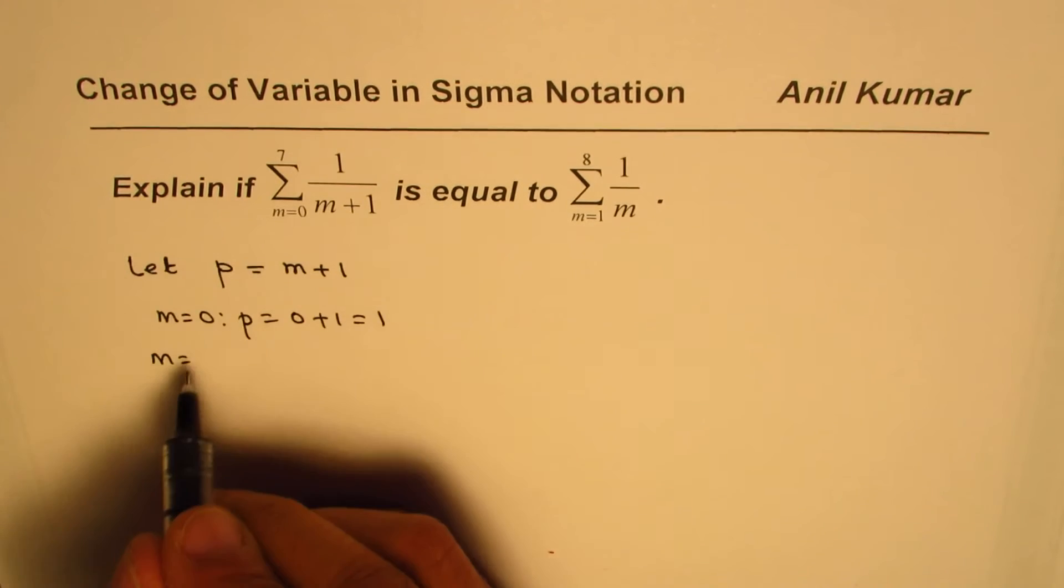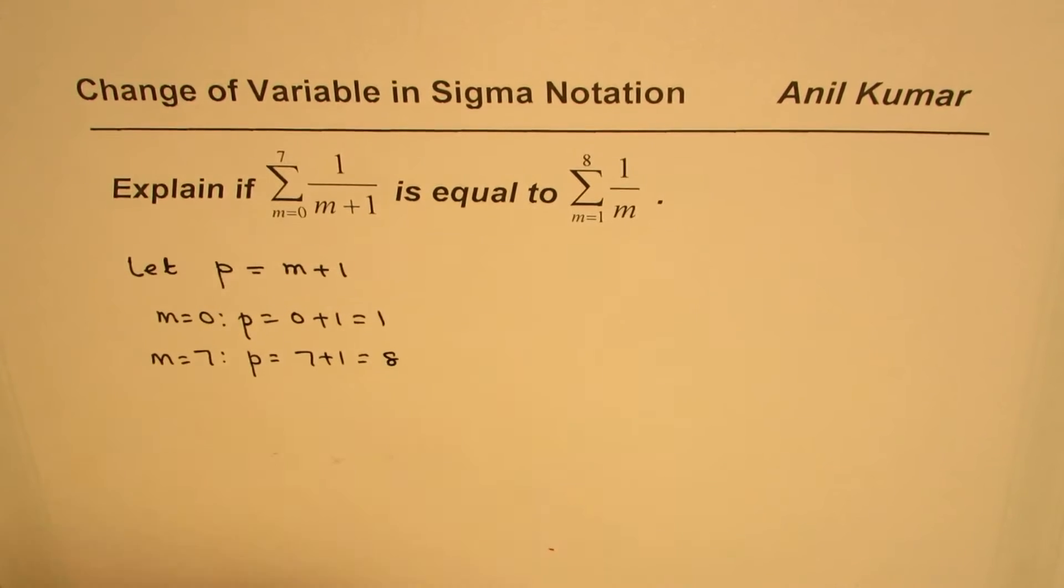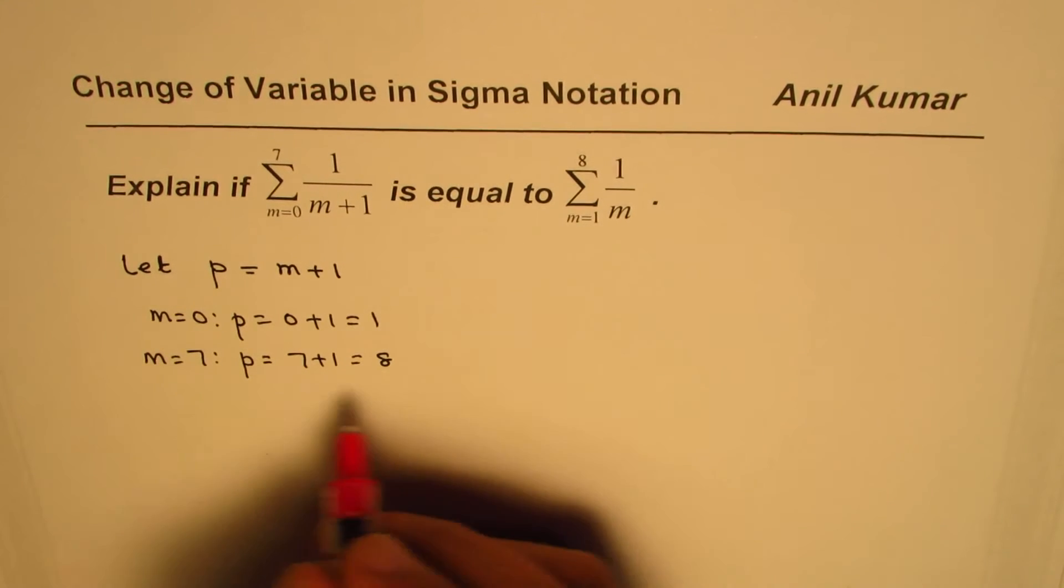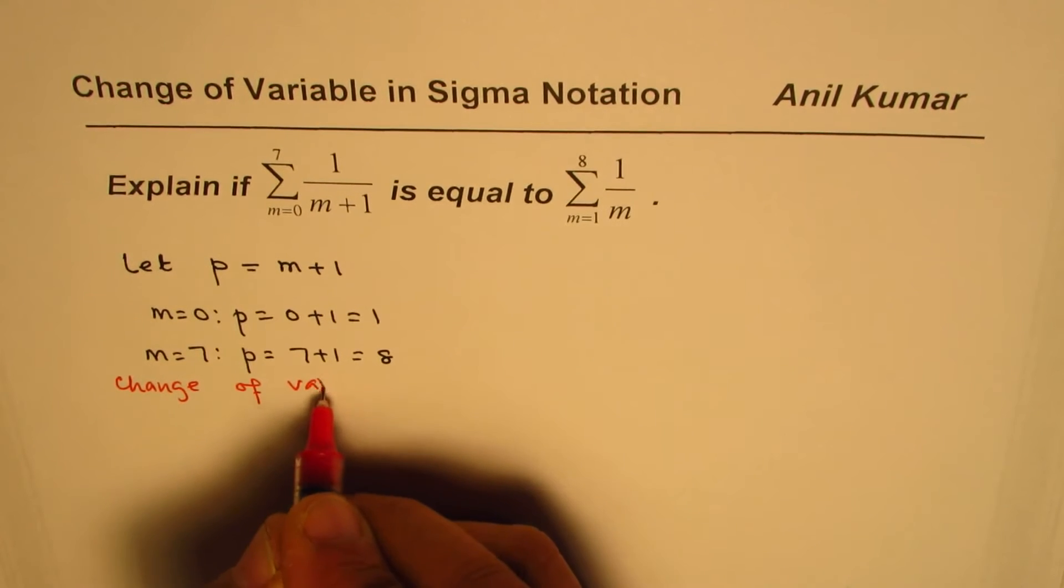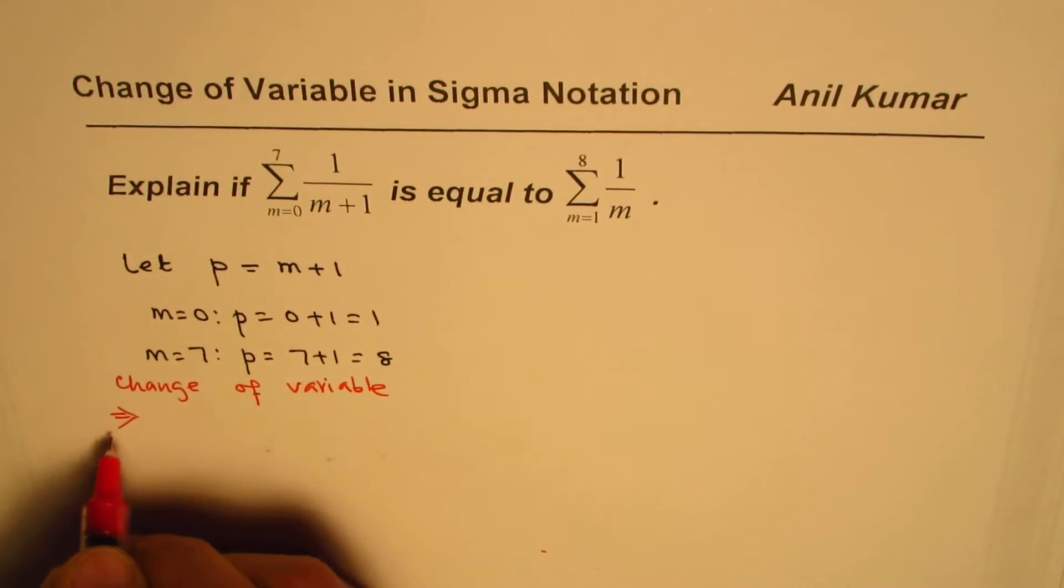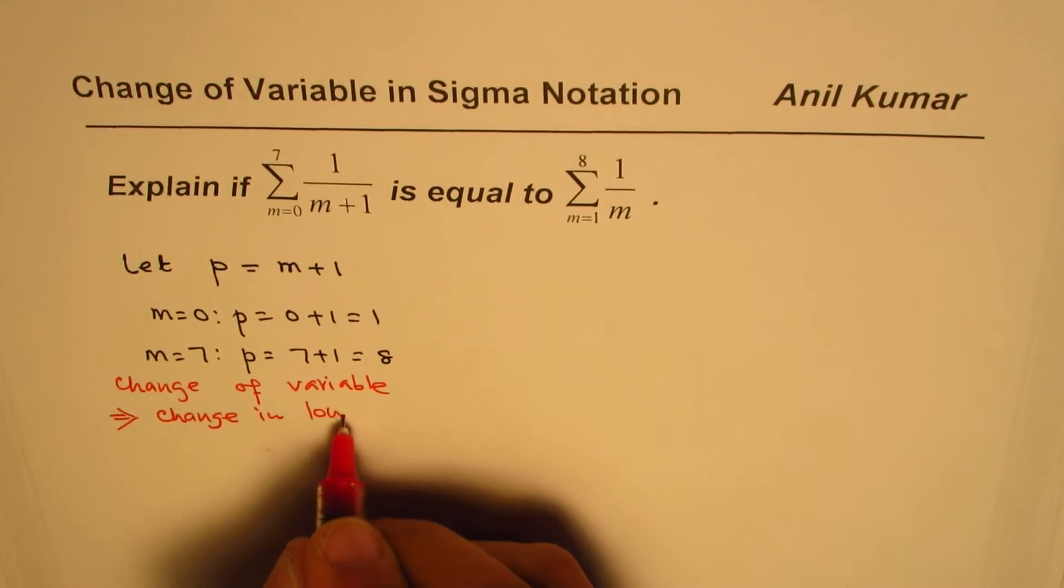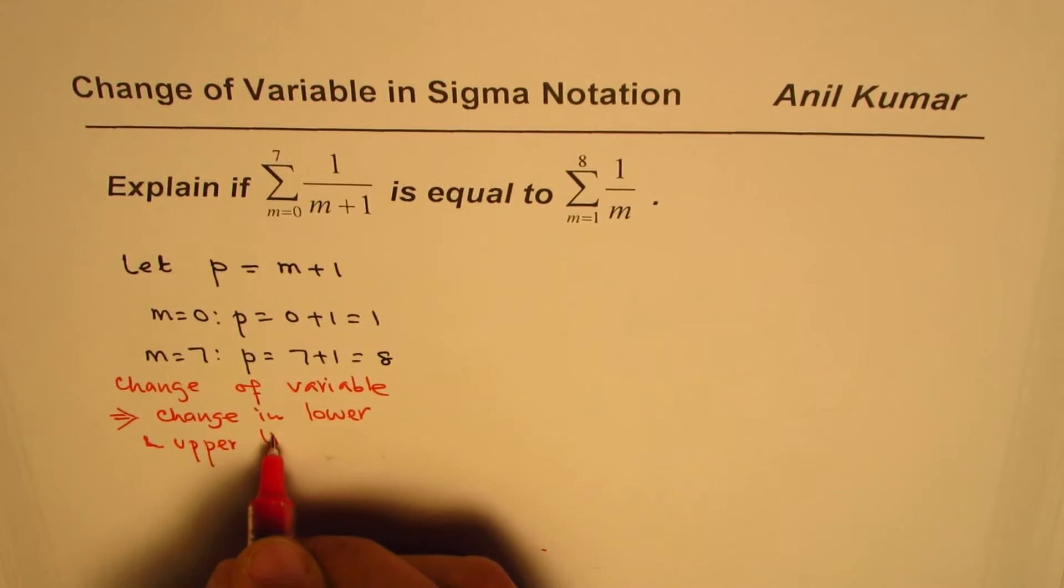And if m is equal to 7, what should be the value of p? P should be 7 plus 1, which is 8. So whenever you change the variables, you have to change the upper and lower limits of the summation also. It is important to note that change of variable will result into change in lower and upper limits.